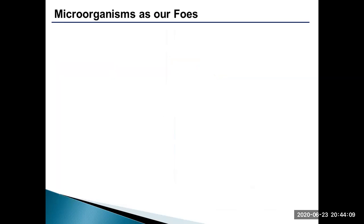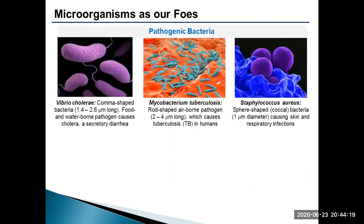There are several microorganisms, of course, which are pathogenic in nature, i.e. disease-causing. Let's talk about pathogenic bacteria. There are fewer than 100 species of pathogenic bacteria which cause diseases in human beings. They can spread through water, air, soil and through physical contact.